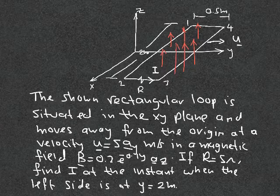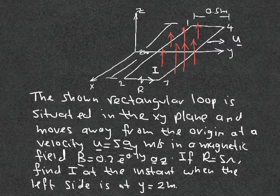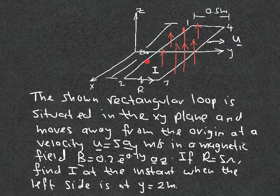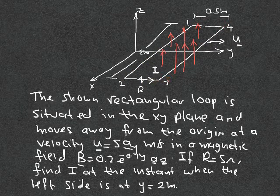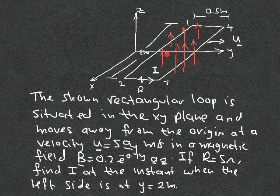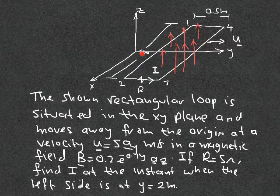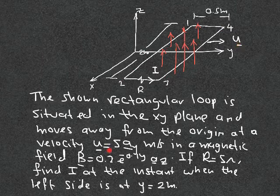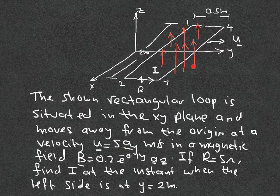We have an example on Faraday's law. We have a rectangular loop — this length here is 2 meters, this one is 0.5 meters. It is moving in the y direction, moving away from the z axis, and the velocity is constant at 5 ay meters per second.